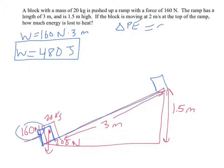Well, it's the mass, which is 20 kilograms, times g, 10 meters per second squared, times the height, 1.5 meters. And that ends up being 300 joules. So that is what some of the work has been used for.